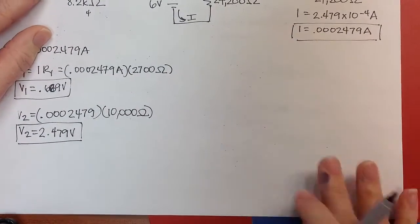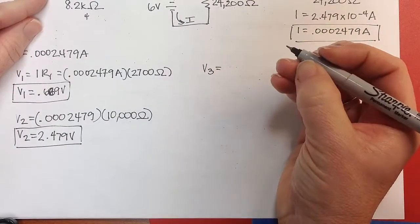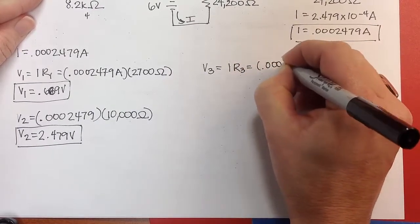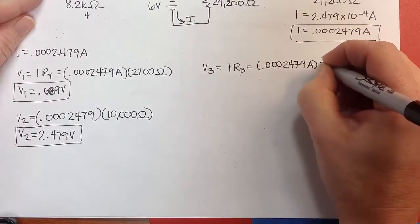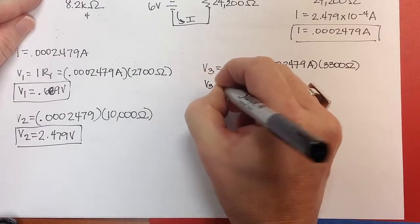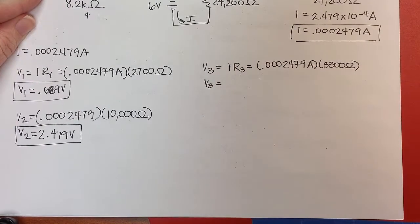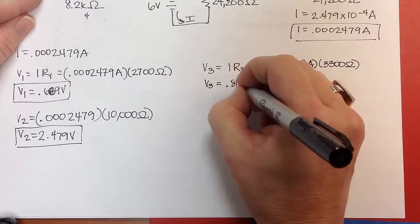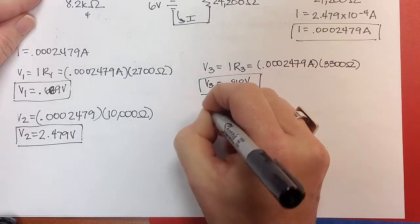Now, let's look at V3. V3 is going to be equal to I times R3, which is going to be 0.8189. That's my second smallest, it's bigger than the 2,700, so it seems to be okay still.